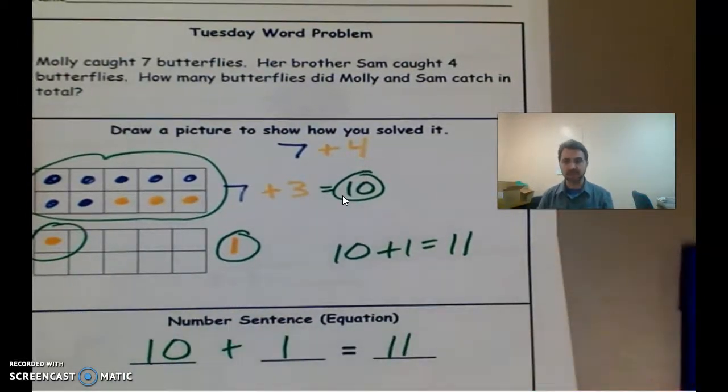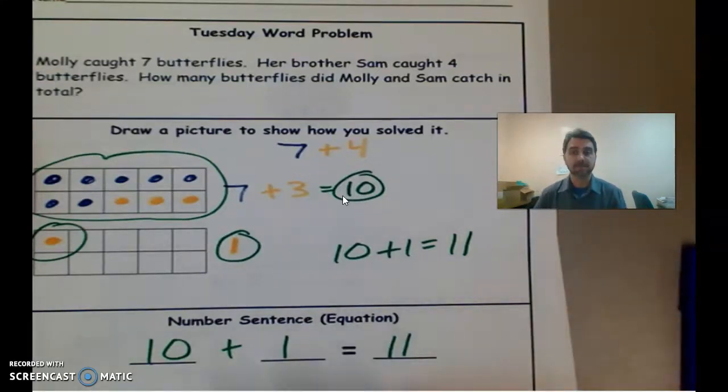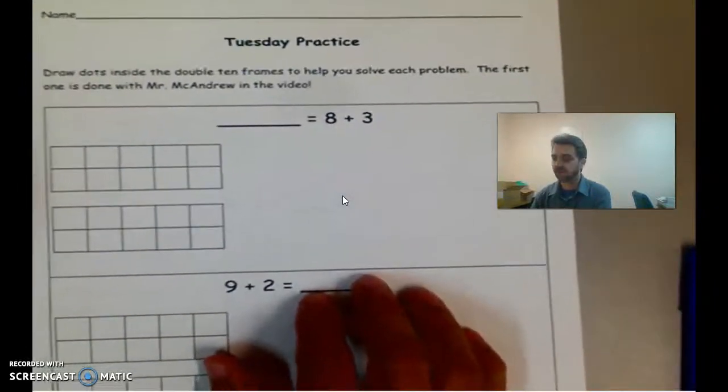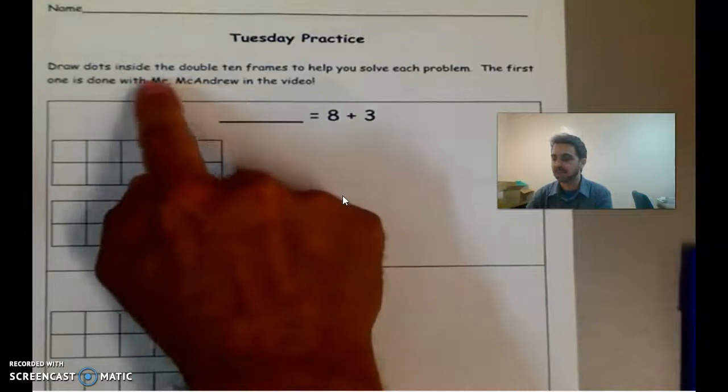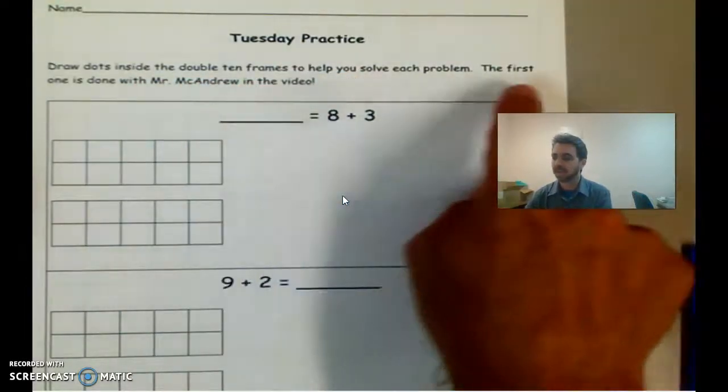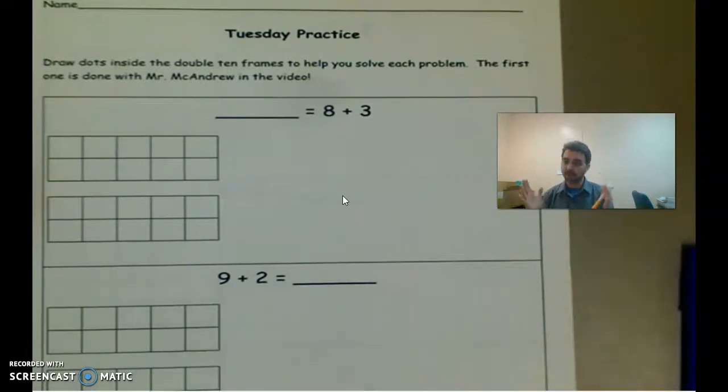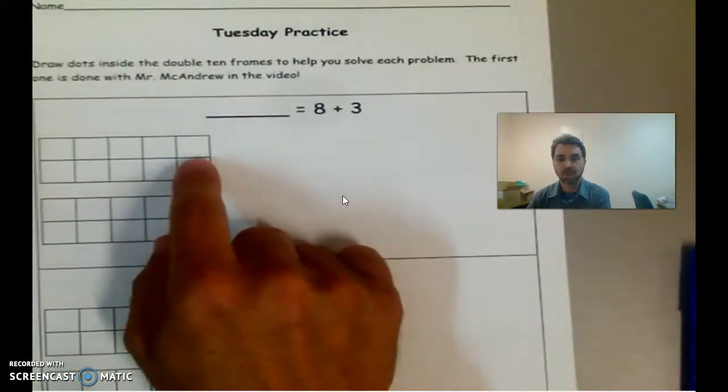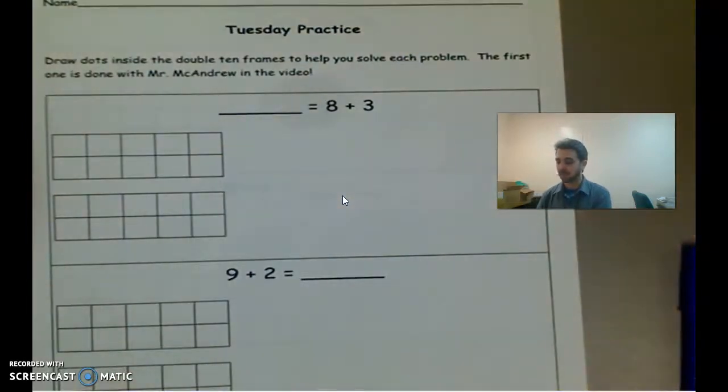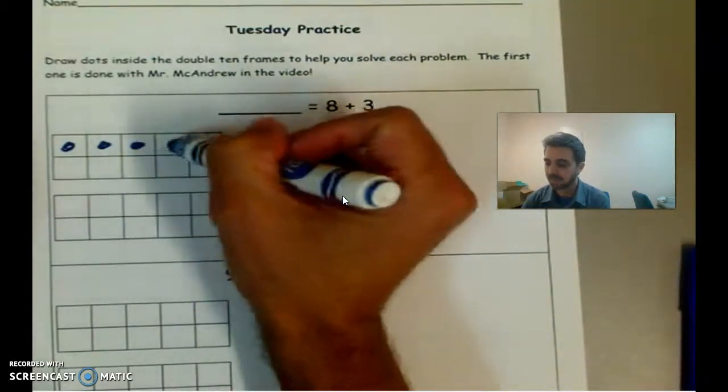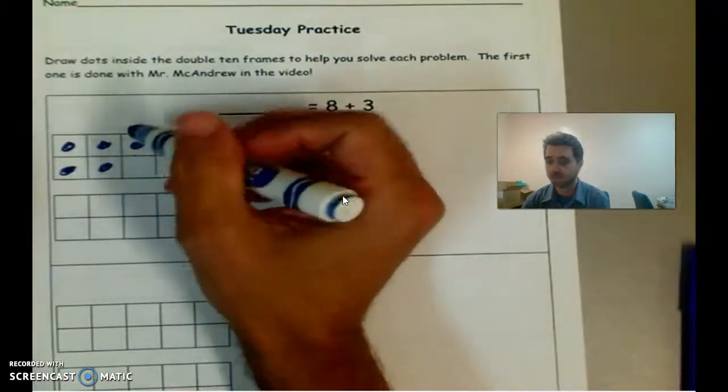All right. If you don't have that down, please write that down. Okay. Pause the video, and then once you have it, come on back. All right. So welcome back. So if you turn the page, there are some practice problems here. Okay. And what I would like you to do, I'm going to do the first one with you. It says draw dots inside the double ten frames to help you solve each problem. The first one is done with Mr. McAndrew in the video. All right. So here we are. So, we're going to think butterflies. Okay. And each of these is a net that only holds ten butterflies.